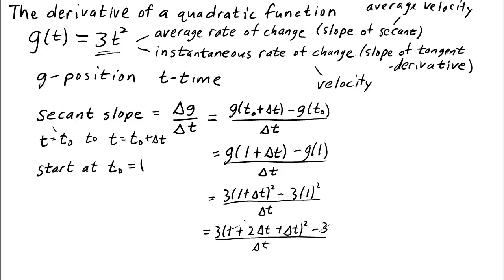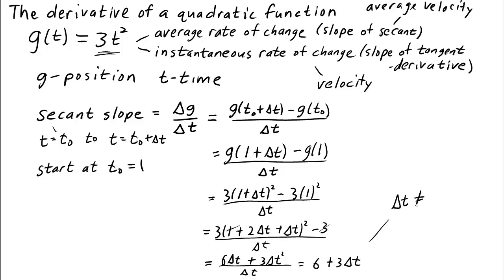Multiplying out the quadratic, we get 3 times (1 plus 2 delta t plus delta t squared), minus 3, still over delta t. The 3 cancels, and we get that the slope of the secant is 6 times delta t plus 3 delta t squared, all over delta t. Canceling out the delta t, we get 6 plus 3 delta t, as long as delta t is not equal to 0. So the slope of the secant from 1 to 1 plus delta t is 6 plus 3 delta t.